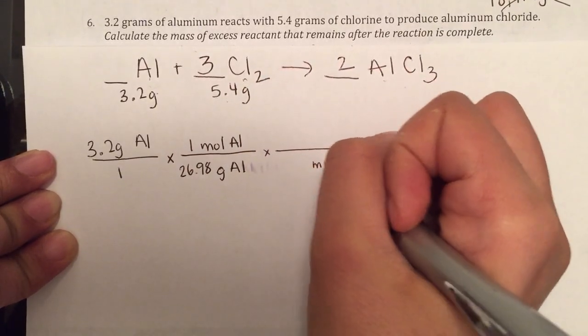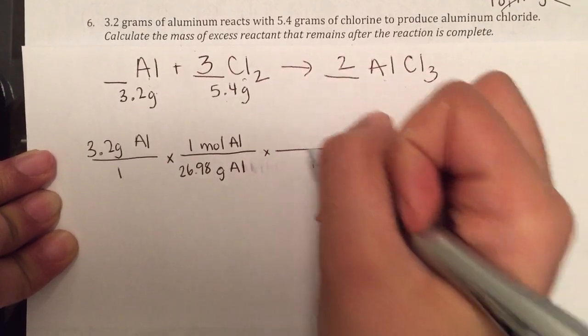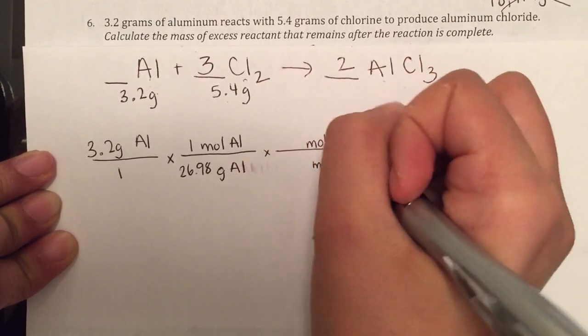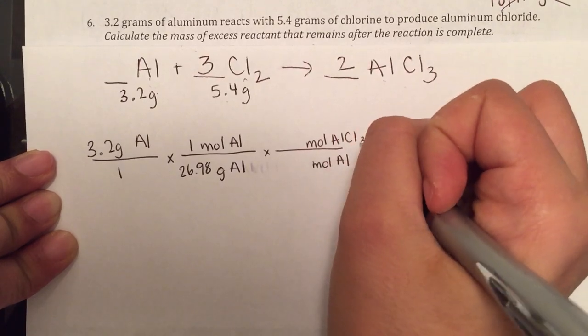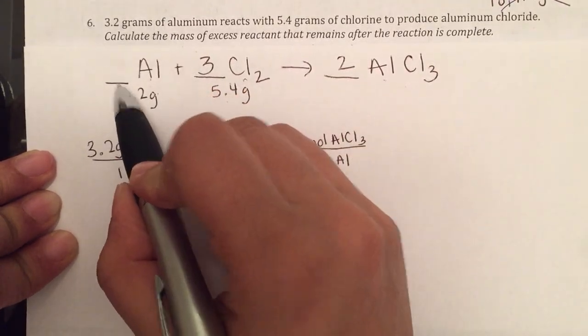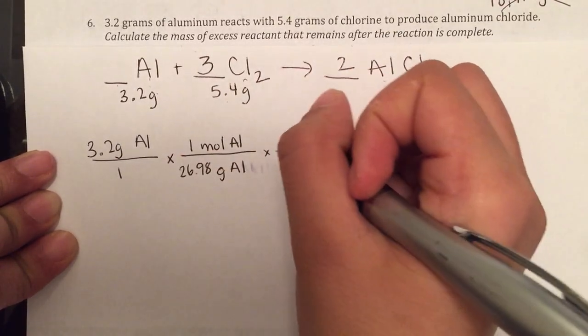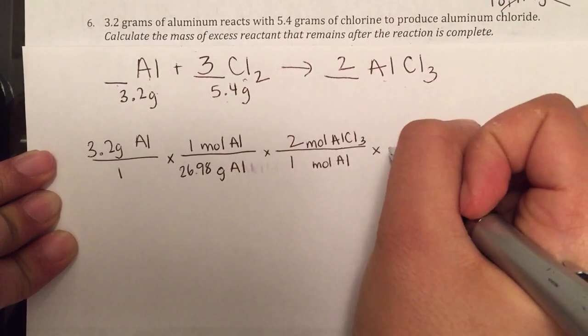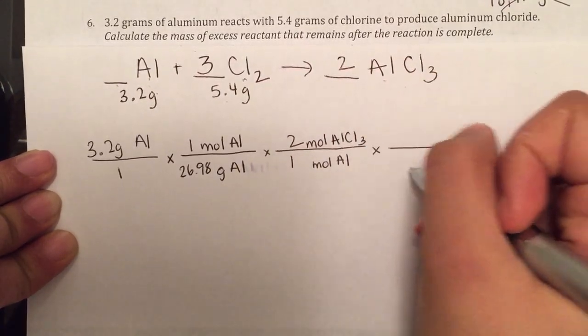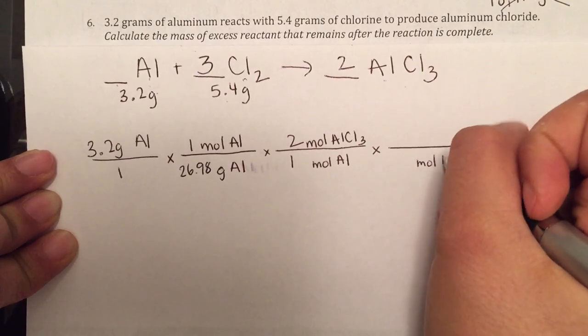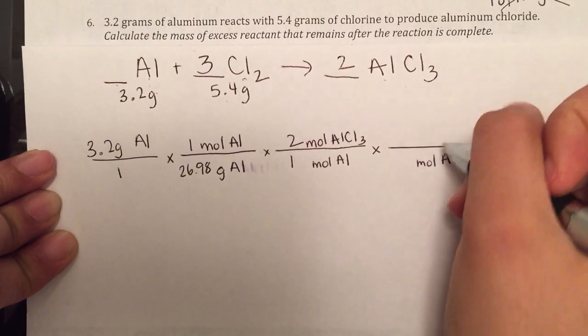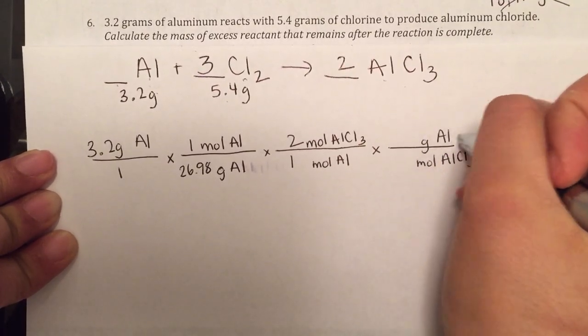Once I have moles, I can go into my mole ratio. I'm going to go for 2 moles of product. So that's a 1 to 2.